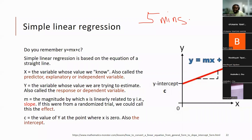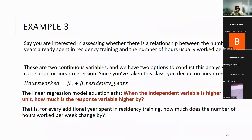The slope is the beta — the beta estimate we are always interpreting is the slope. The intercept is beta zero, and the slope coefficient is beta one. We looked at that when we studied linear regression. We earlier talked about predictor, explanatory, and independent variable; we talked about response or dependent variable; the slope, which is also the effect; and the intercept.